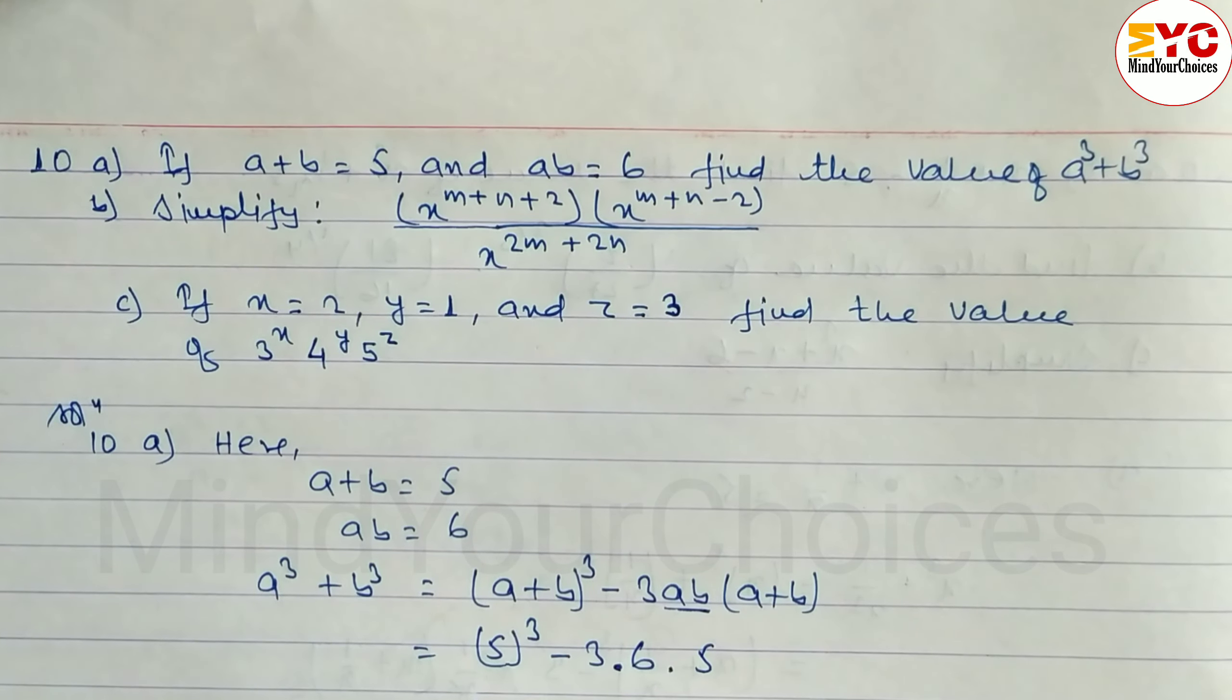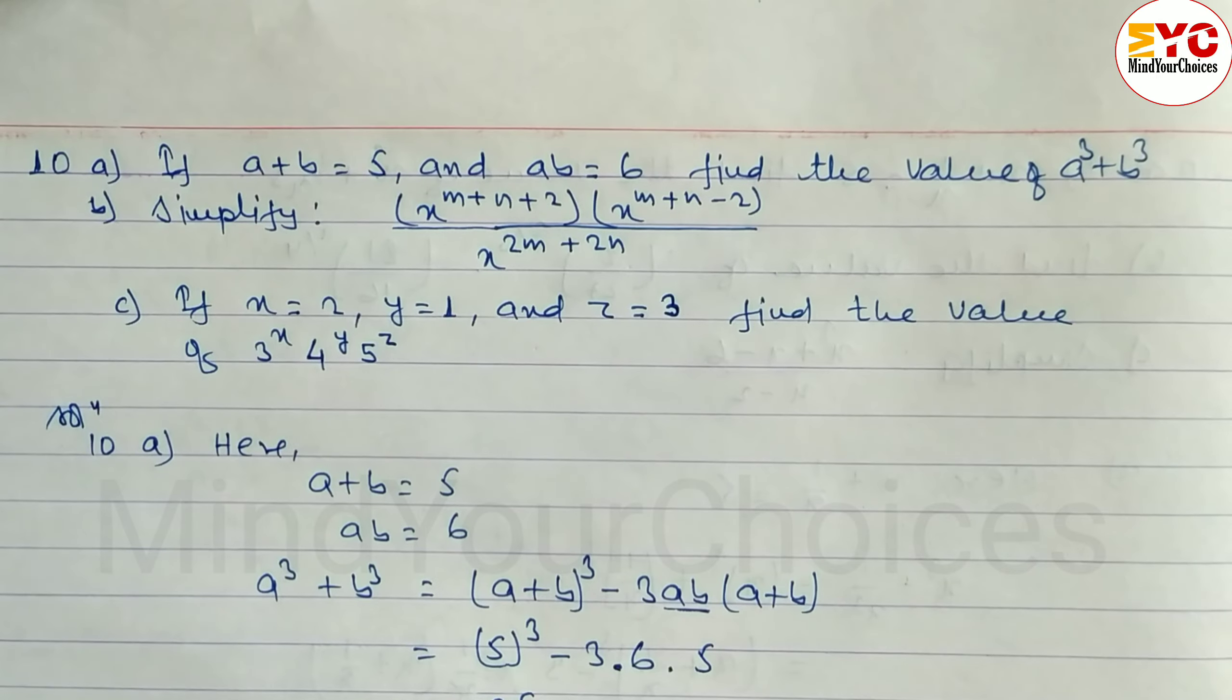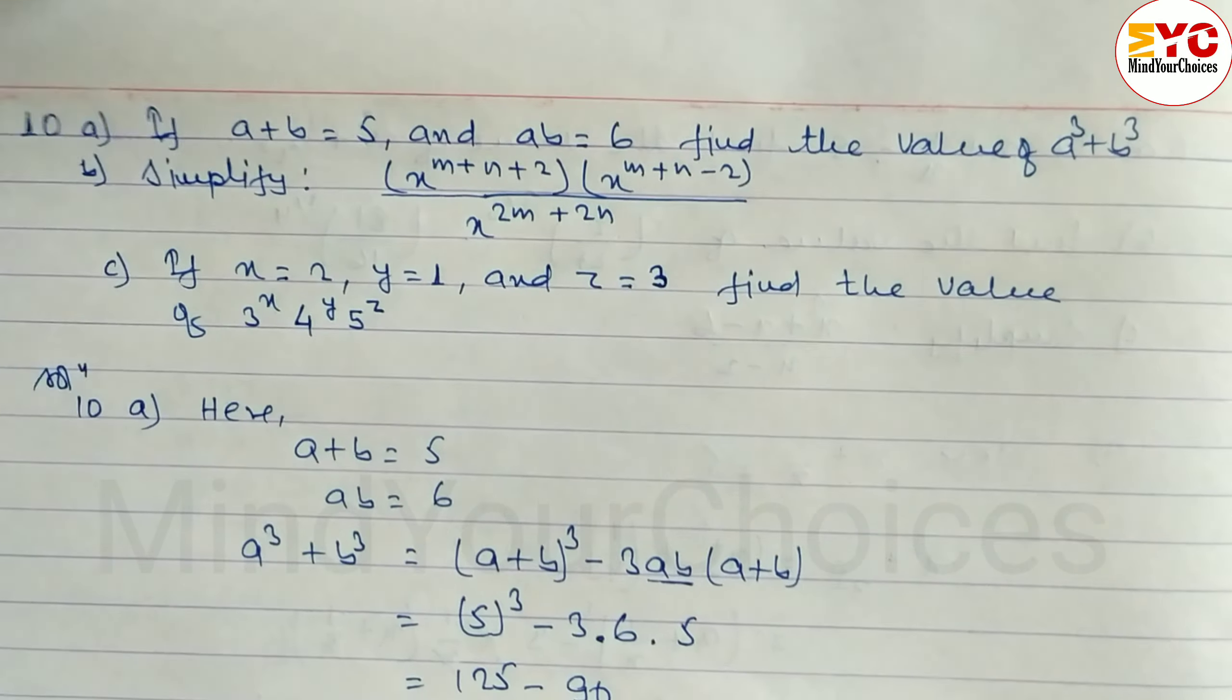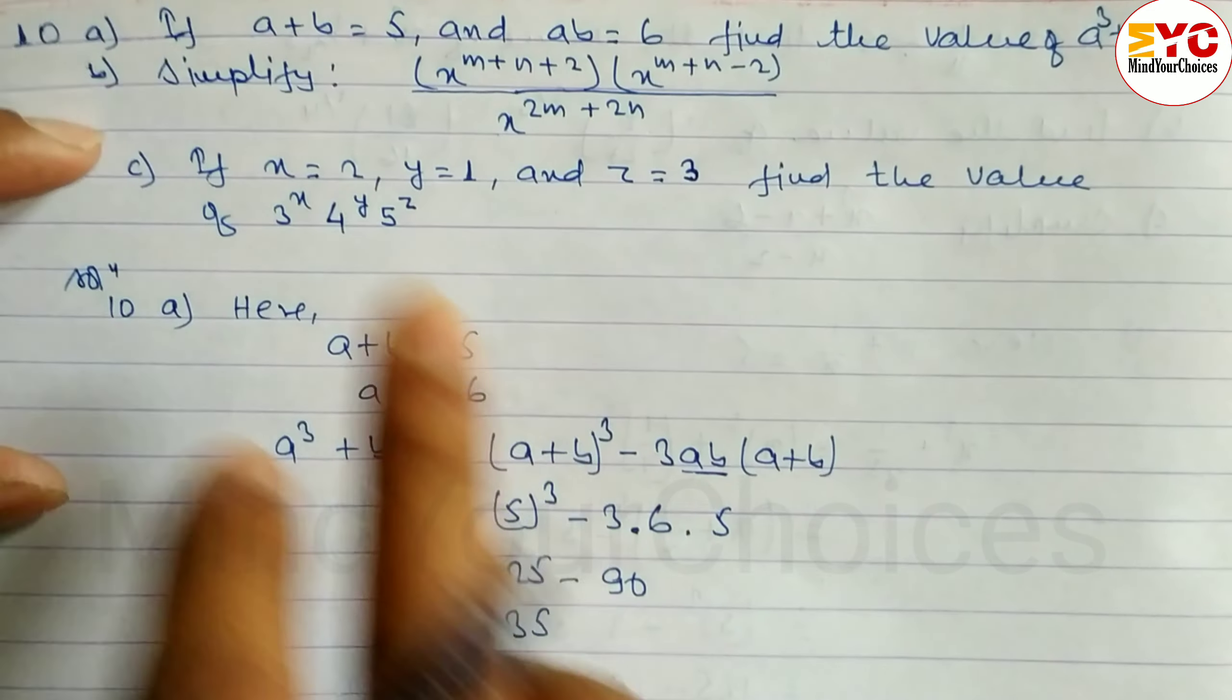So 6 into A plus B which is 5. 5 power 3 is equal to 125 minus, multiply 5 times 6 is 30, 30 into 3 is 90. When you subtract, we get 35. So 35 is your answer.